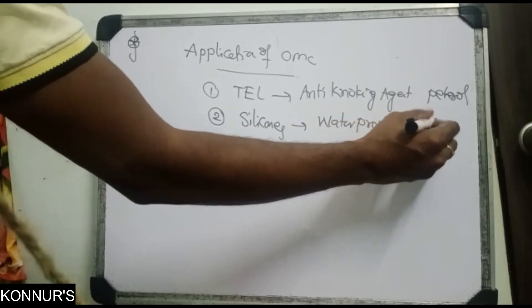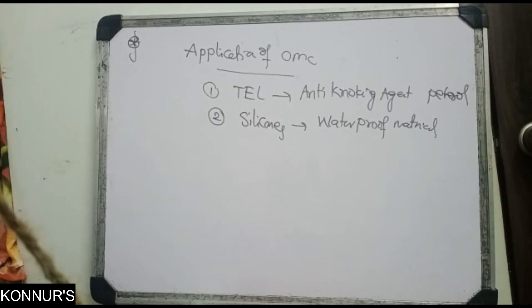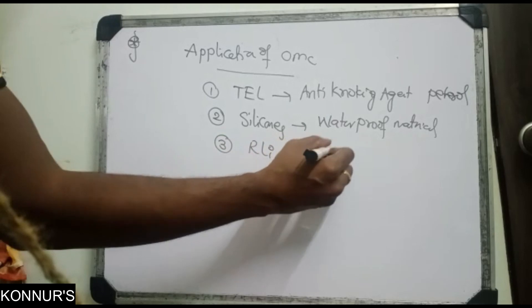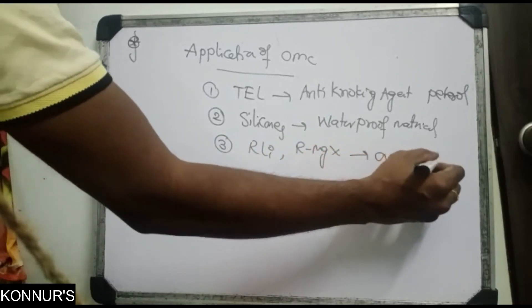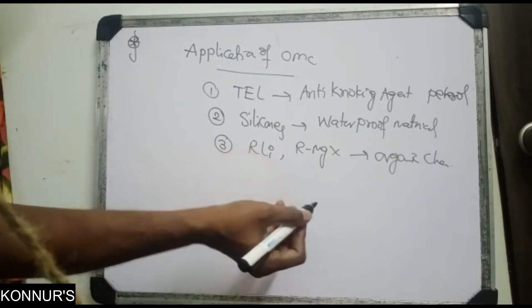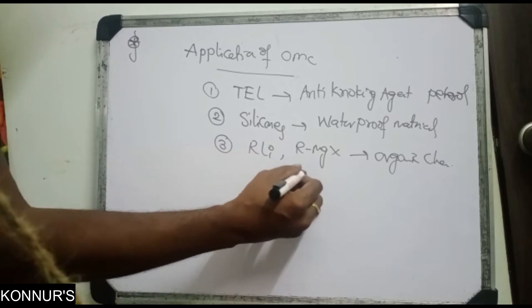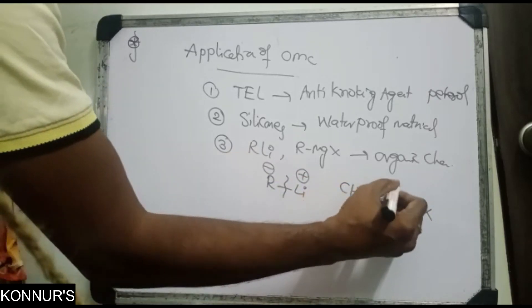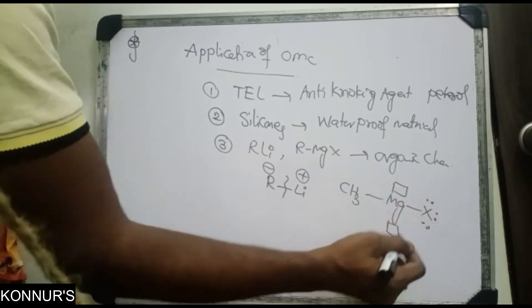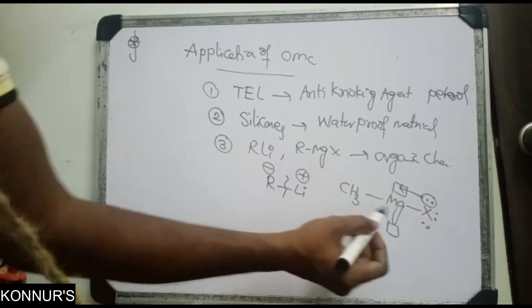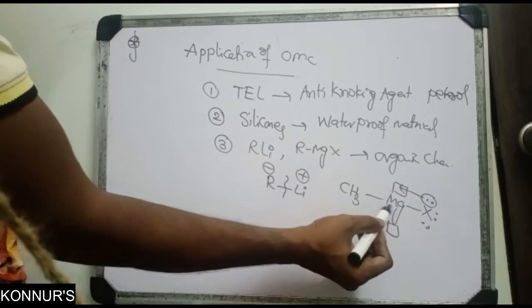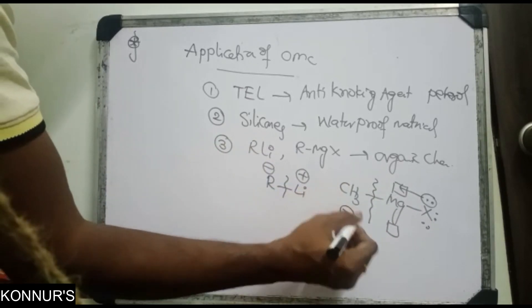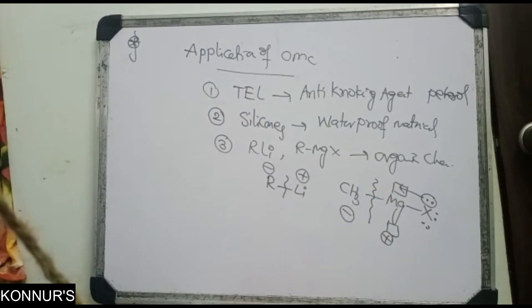Silicones are waterproof materials — already discussed in 14th group elements. In organic chemistry, RLi and RMgX (Grignard reagent) are very famous reagents. Their importance is that they produce negatively charged carbon. In CH3MgX, magnesium has two empty orbitals and halogen donates lone pairs; the carbon-magnesium single bond is breakable, giving carbon a negative charge.